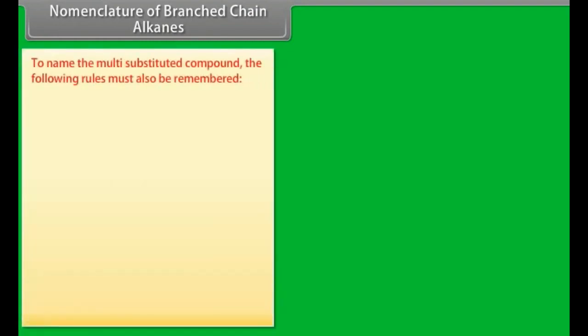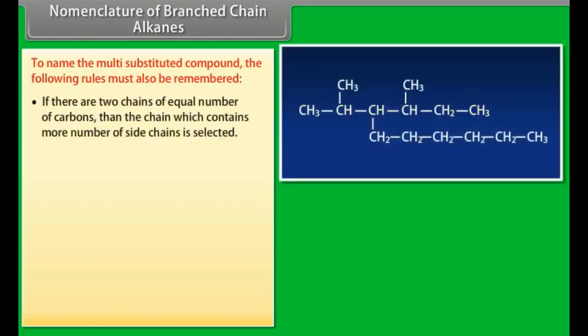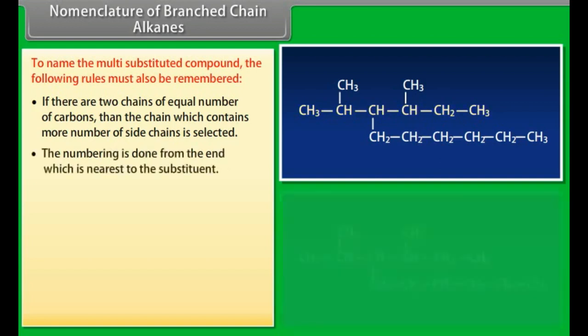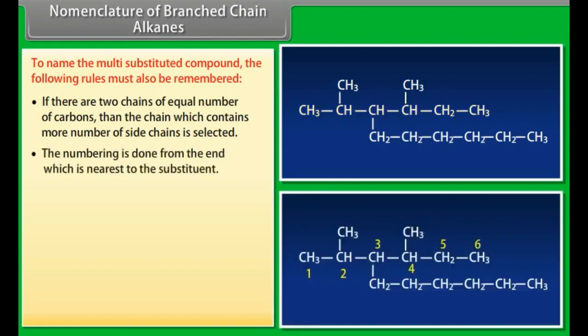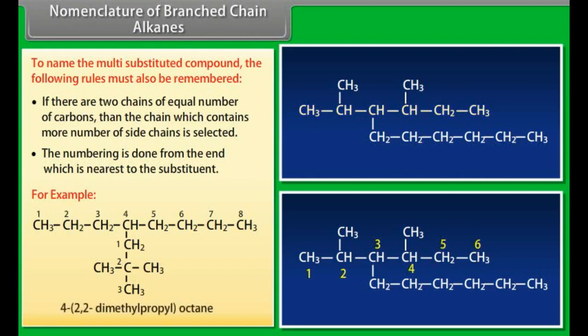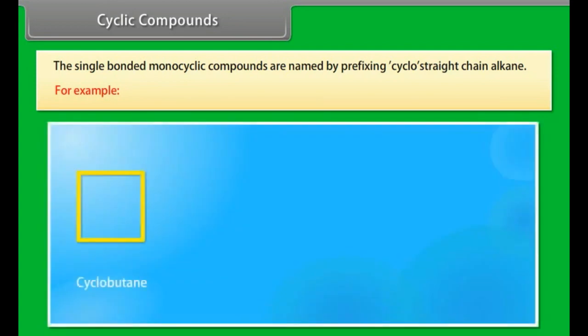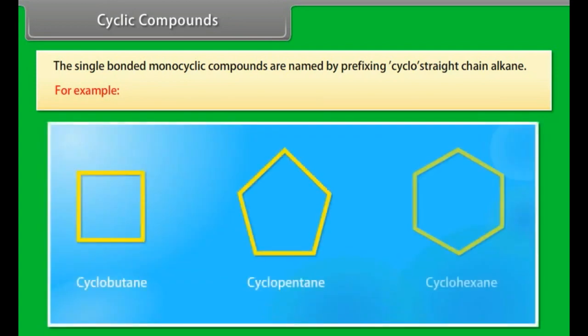To name multi-substituted compounds, the following rules must also be remembered: if there are two chains of equal number of carbons, the chain which contains more side chains is selected. The numbering is done from the end nearest to the substituent. For example, the IUPAC name of the given compound is 4-(2,2-dimethylpropyl)octane. Single bonded monocyclic compounds are named by prefixing cyclo to the parent chain alkane name. For example: cyclobutane, cyclopentane, cyclohexane.